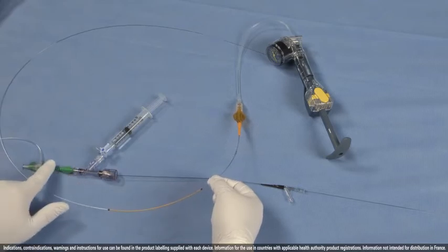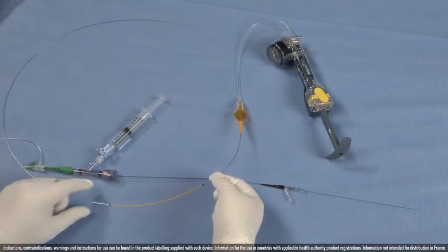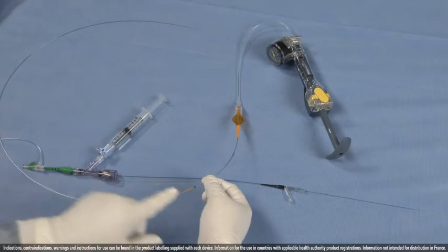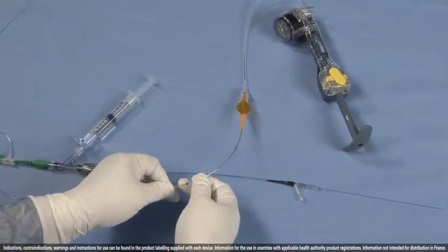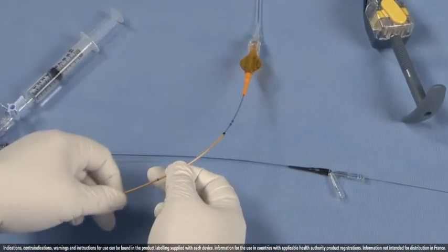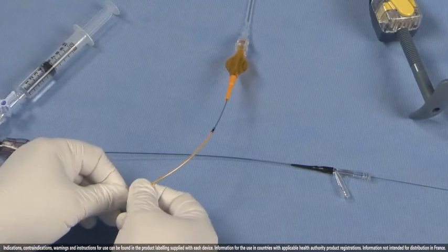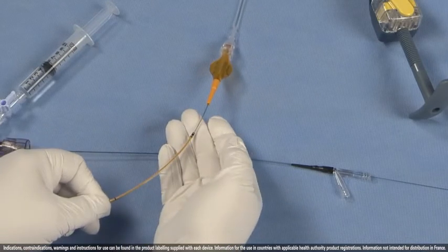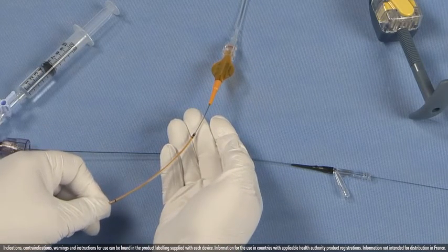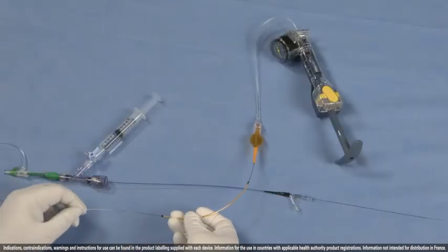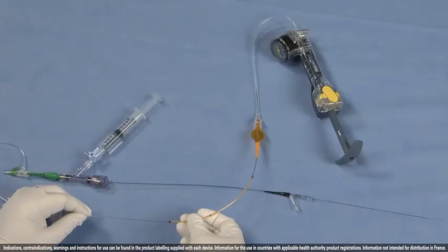Today we're using a 100 centimeter 6 French guide, so we need to adjust the telescope from the 90 centimeter position to the 100 centimeter position by moving the orange telescope until the stop is locked between the two black lines. This has exposed an additional 10 centimeters on the length of Trapper.